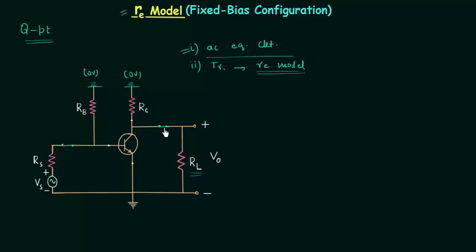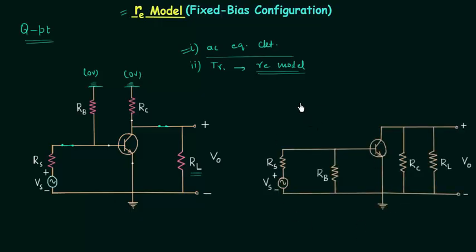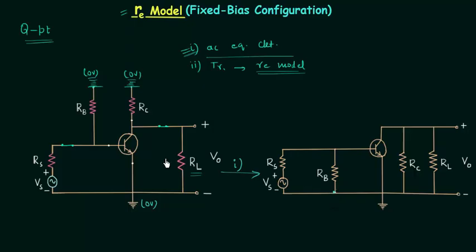Once you rearrange this circuit you will have the AC equivalent circuit of the BJT amplifier. We have obtained this circuit after completion of step number one. The potential at this point is zero volts and the potential at this point is also equal to zero volts. You can see this branch is connected to ground. We have connected this terminal to this branch, and we have also connected this terminal to this branch. So this is all you need to do to obtain the AC equivalent circuit.